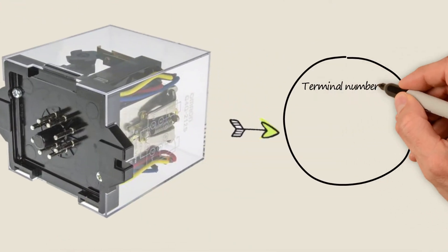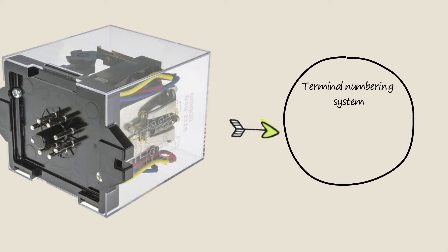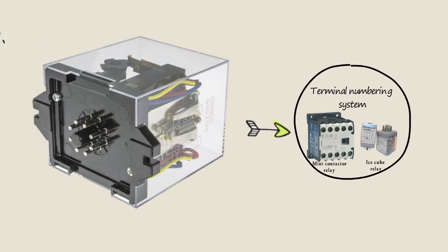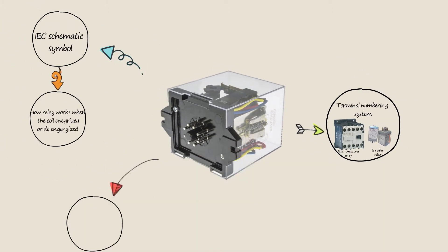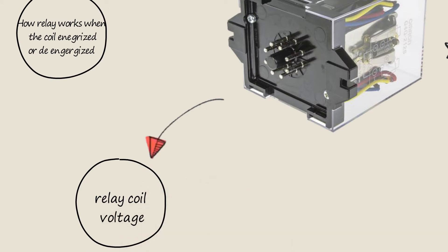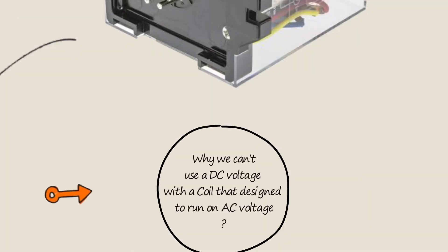We will also cover the terminal numbering system in mini contactor relay and ice cube relay, relay coil voltage, and why we can't use a DC voltage with a coil that is designed to run on AC voltage.